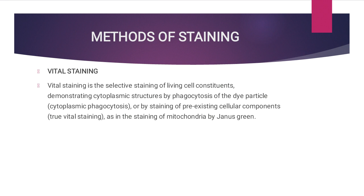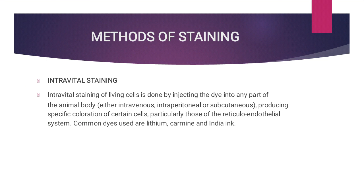In the reticulo-endothelial system, vital staining is performed with trypan blue or propidium iodide for eukaryotic cells. The usual purpose of this is to reveal the cytological details that might otherwise not be apparent. Staining can also reveal where certain chemicals or specific chemical reactions are taking place within cells or tissues.